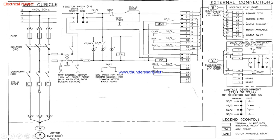From the power circuit we take two wires — R and Y, or R and B — through control fuses and connect them to the control transformer. I am using a single-phase control transformer, so two phases are connected here. From the secondary side we step down from 440 volt to 110 volt.